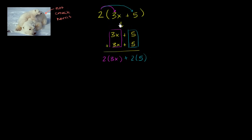And the whole reason why I'm doing this is just to show you that it is exactly what you already know. But with that out of the way, let's continue to simplify it. So when you multiply the 2 times the 3x, you get 6x. You multiply the 2 times the 5, you get 10. So this simplified to 6x plus 10.